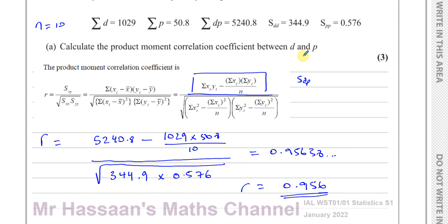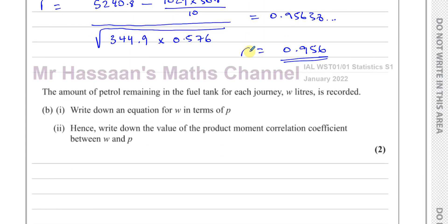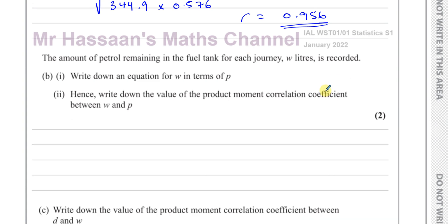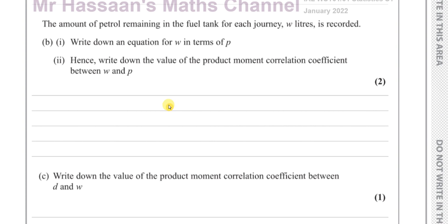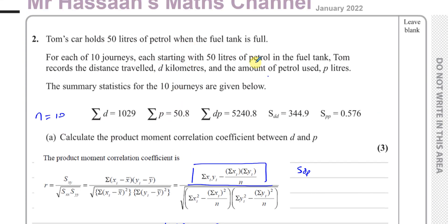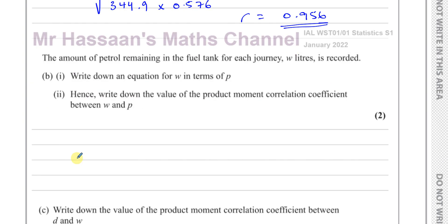Part B says: the amount of petrol remaining in the fuel tank for each journey, W litres, is recorded. Write down an equation for W in terms of P. The amount of petrol at the start of the journey is always 50 litres, and the amount used is P, so the amount remaining is W equals 50 minus P. Simple as that — it seems worth only one mark.